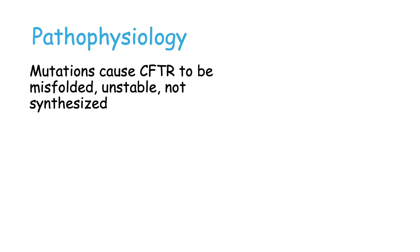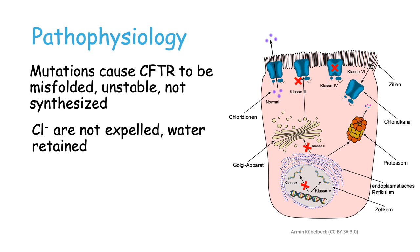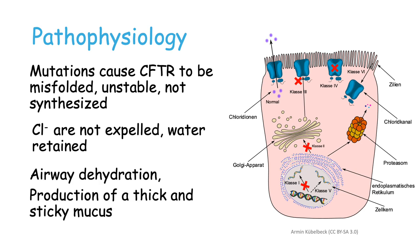In patients with cystic fibrosis, mutations cause the CFTR to be either misfolded, unstable, or not synthesized at all. Essentially, what happens is that chloride ions are not expelled, so water is retained inside the cell, and this leads to airway dehydration and the production of thick and sticky mucus.